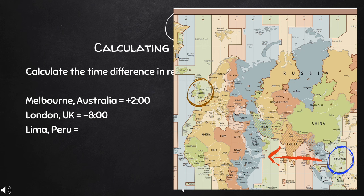Let us now move forward to Europe and find the time difference between the Philippines and London, UK. Encircled in brown is London, UK, and the Philippines in blue. Since we are moving towards the left, that means the Philippines is ahead of London, UK. London has 0 UTC, while the Philippines has plus 8 UTC. Since we are ahead, the difference between London and the Philippines is negative 8 or minus 8.